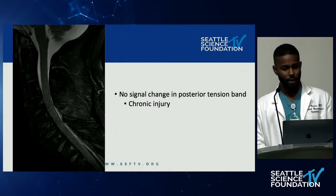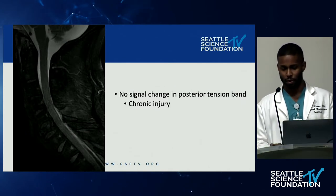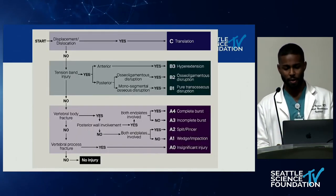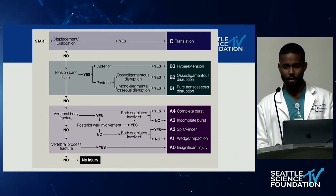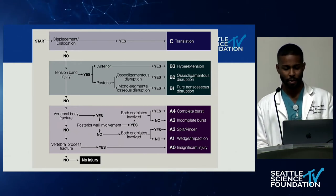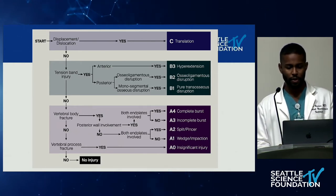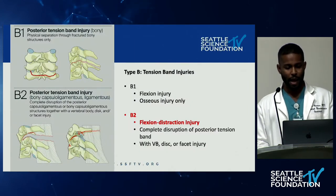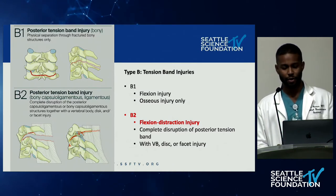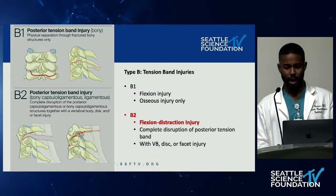For our algorithm for patients presenting with cervical trauma, the first step is diagnosis. Using the AO Spine classification system, we look at either anterior column injury, a posterior column with tension band injury, or a complete dislocation. For this specific case, we have a posterior tension band injury that is mostly ligamentous. This would be a type B2 injury — a flexion distraction injury mechanism with disruption of the posterior tension band and a concomitant vertebral body injury.